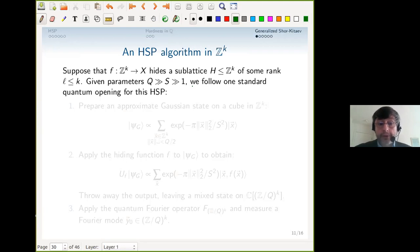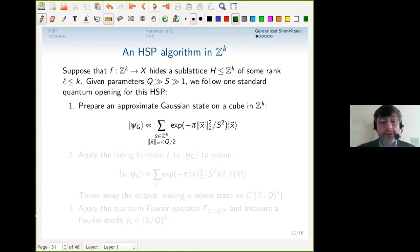Now let me turn to the hidden subgroup algorithm in Z^k with deficient rank. I'm going to choose two parameters Q and S and follow one standard quantum opening for HSP. I have two size parameters because Gaussian states are convenient. First, prepare an approximate Gaussian state on a giant cube of size Q—the Gaussian state has width S—on our input group. Since we restricted it to a finite cube, this is a valid finite computation.